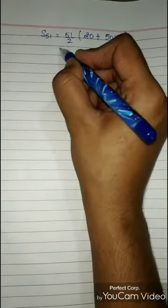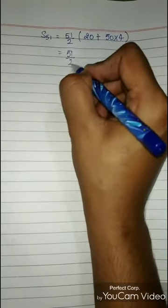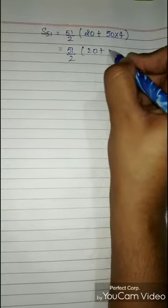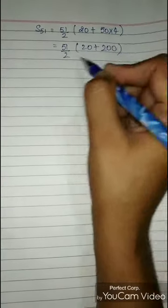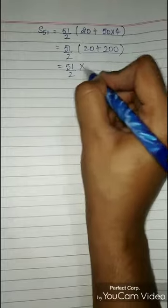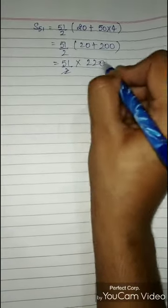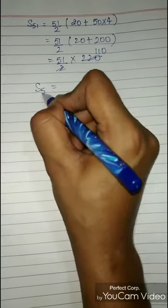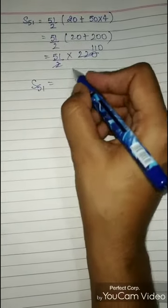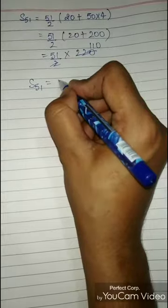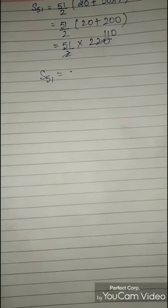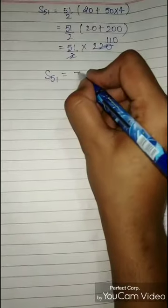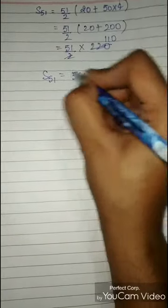Solving: 20 + 200 = 220, so S51 = 51/2 × 220 = 51 × 110 = 5610. The sum of 51 terms of the AP is 5610.